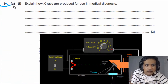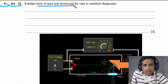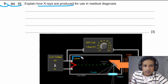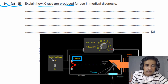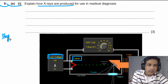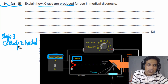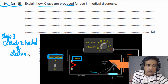For question number 9, part A1, we need to explain how X-rays are produced. Looking at the diagram, we can see the cathode. In stage 1, the cathode is heated using low voltage, and electrons are released.